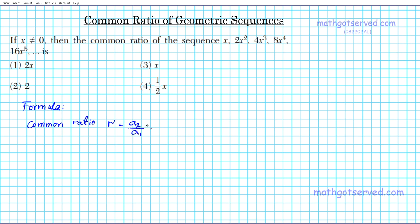Alternatively, you can take the third term divided by the second term, or the fourth term divided by the third term. The general rule is: take any term a(n) and divide it by the term before it, a(n-1), and that gives you the common ratio.